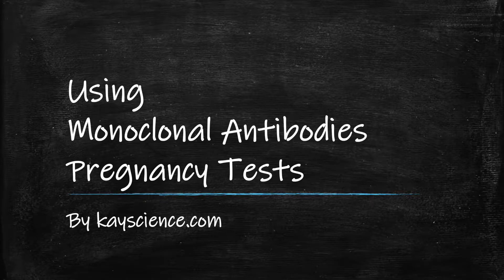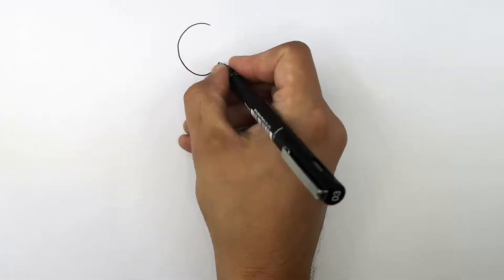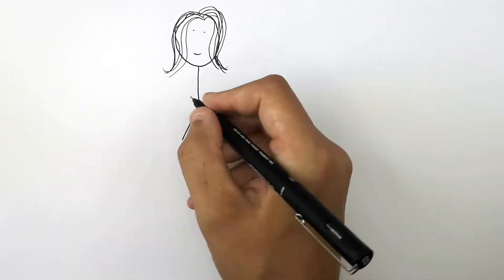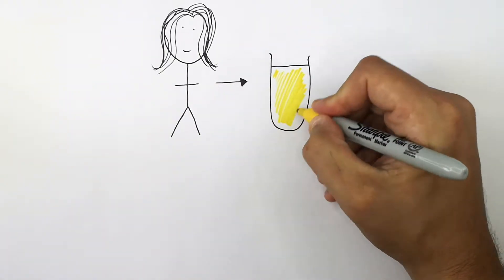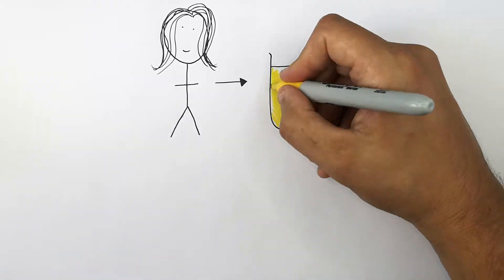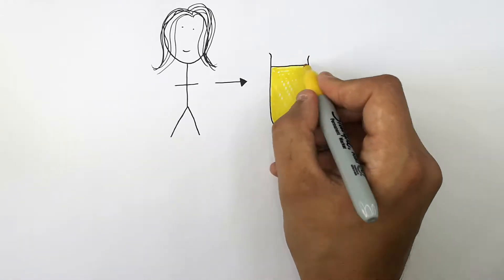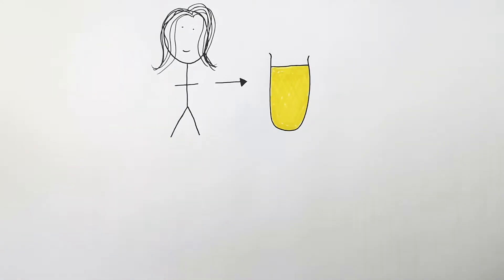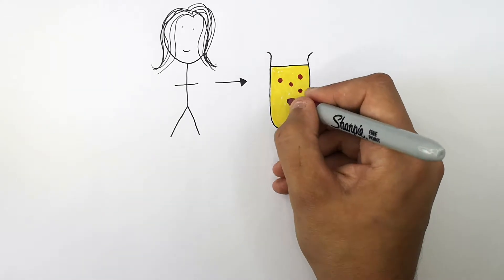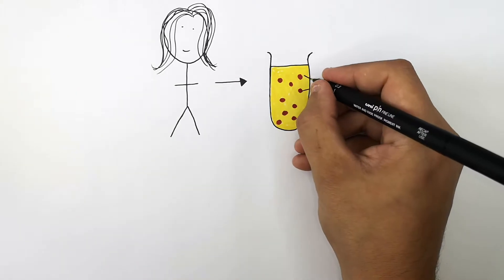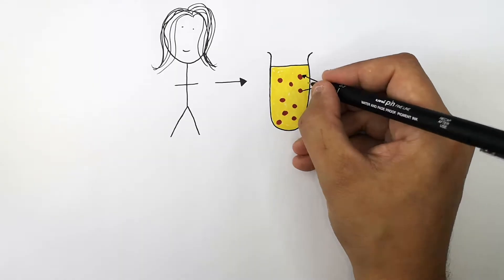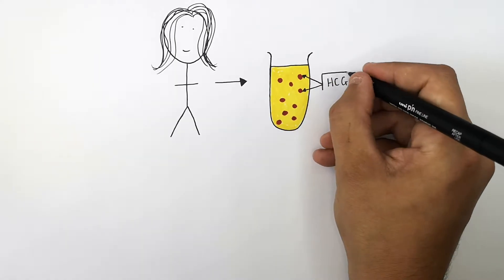Using monoclonal antibodies in pregnancy tests by CaseScience.com. This here is a woman, and the first identifier to determine whether or not she's pregnant will be in her urine. This here is a sample of her urine, and in the urine is a hormone called HCG. The purple dots represent the hormone HCG.